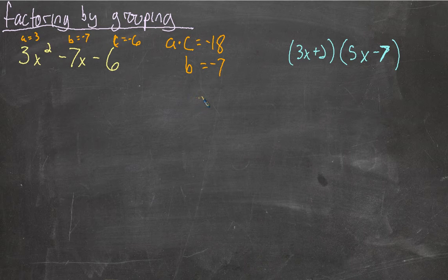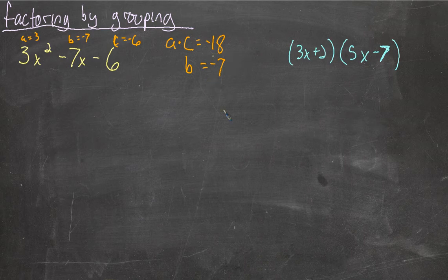Alright. So, we are going to find two numbers that multiply to negative 18 and add to negative 7. What we do with them might be surprising to you. Alright. So, what two numbers multiply to negative 18 and add to negative 7? Negative 9 times 2 does the job. Negative 9 times 2. Those numbers may look familiar to you. We just saw them. So, that does it. So, what do we do with those? Okay.